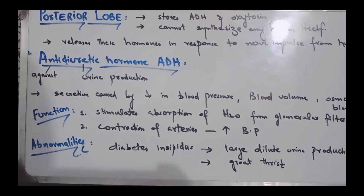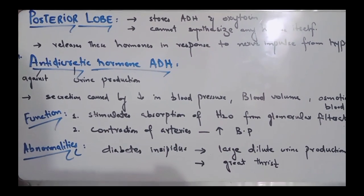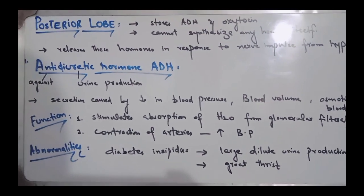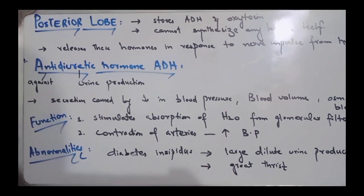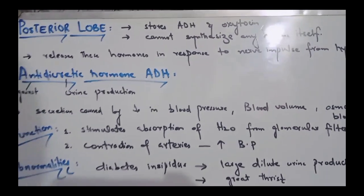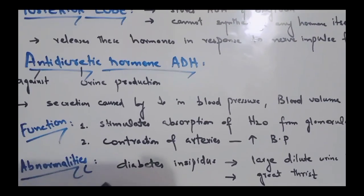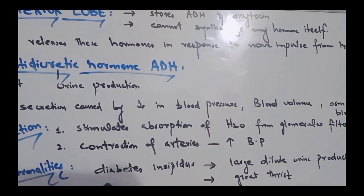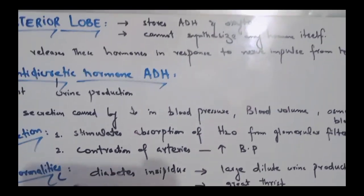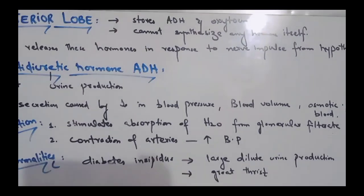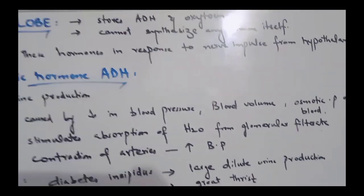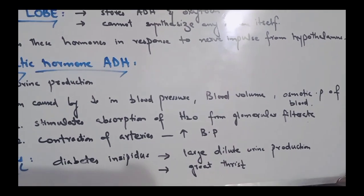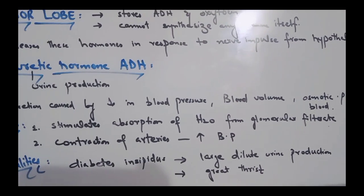There are some abnormalities related to ADH. If ADH in the body is low, an adverse condition called Diabetes Insipidus occurs. Diabetes Insipidus is characterized by large amounts of dilute urine production, and blood pressure is also reduced.